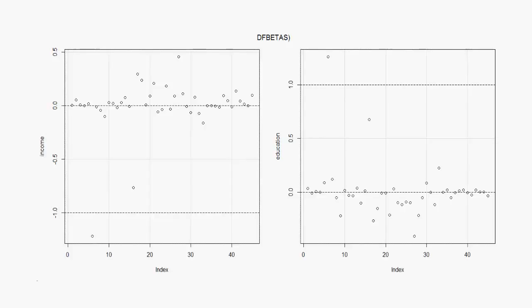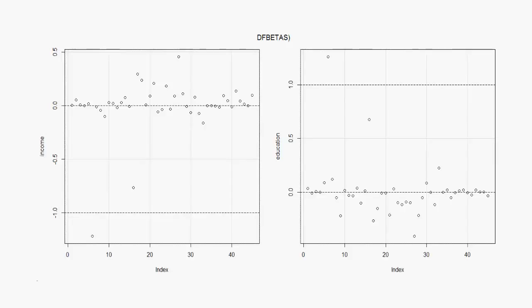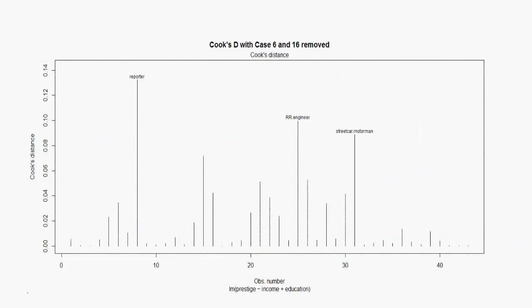So I deleted the case with the biggest influence measure — case 6, which is the Minister — and refitted the same model. Case 16 also stood out in Cook's D, so I deleted that too, meaning cases 6 and 16 have been deleted. Comparing the coefficients before and after deletion of these two cases, the coefficients for income and education changed around 40 to 45%, so I would say that's a big change. Bringing up a plot of Cook's D with the two cases removed, you see that although three points are labelled, there are no points that really stand out compared to before. About 4.5% of the cases have been dropped already, and we have to bear in mind that influential cases by their nature should only make up a small percentage of the data.